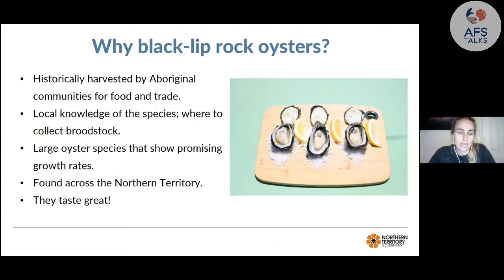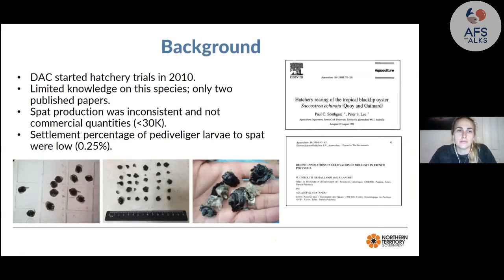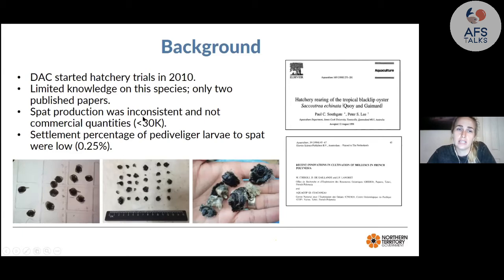Black lip oysters are a really large species — they can grow to the palm of your hand, and in some areas to dinner-plate size — showing promising growth rates that are important for aquaculture return on investment. They're found across the Northern Territory, so many communities could get involved, and most importantly they taste really good. The Darwin Aquaculture Centre started hatchery trials in 2010 with very limited prior knowledge. Initially, spat production was inconsistent at less than 30,000 spat, with only 2.25 percent settlement — not commercially viable.